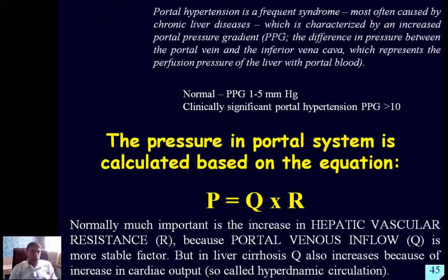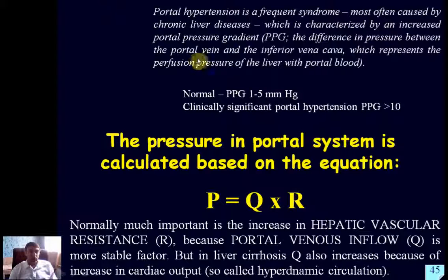To characterize portal hypertension in more detail: older approaches simply measured pressure in the portal system, but for accuracy it is better to measure the difference between pressures in the portal vein and the inferior vena cava — the portal pressure gradient. If this gradient is more than 10 mmHg, we have clinically significant portal hypertension. Normally it should be up to 5 mmHg; 6 to 9 mmHg is subclinical.